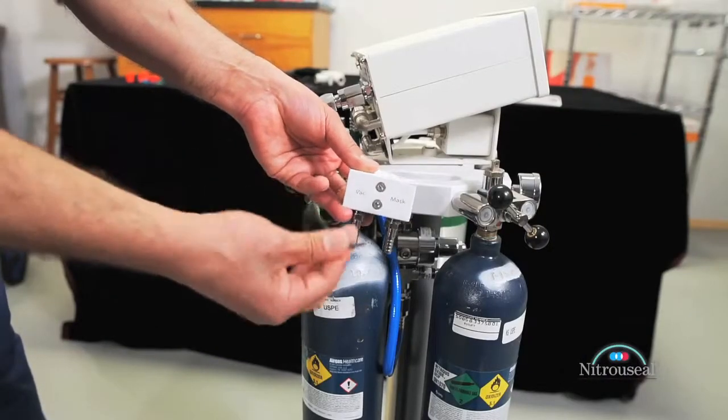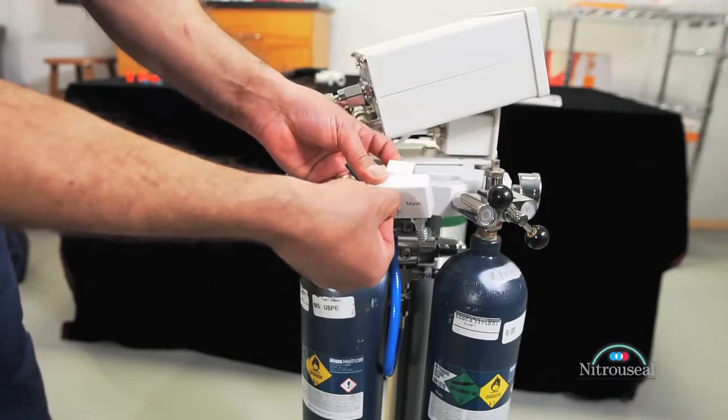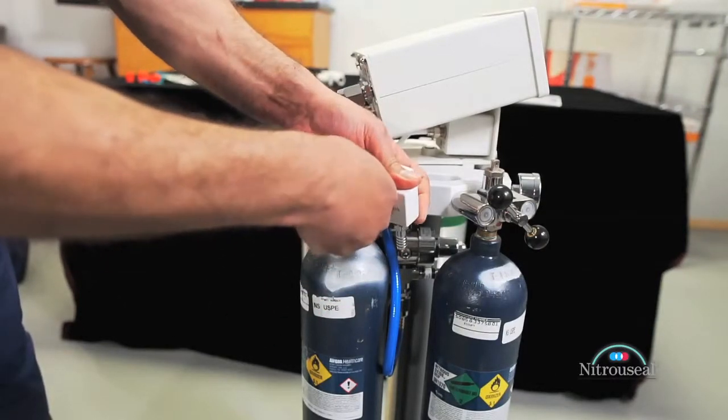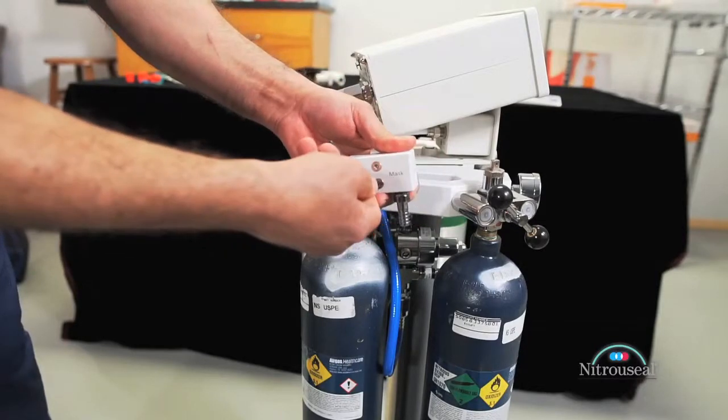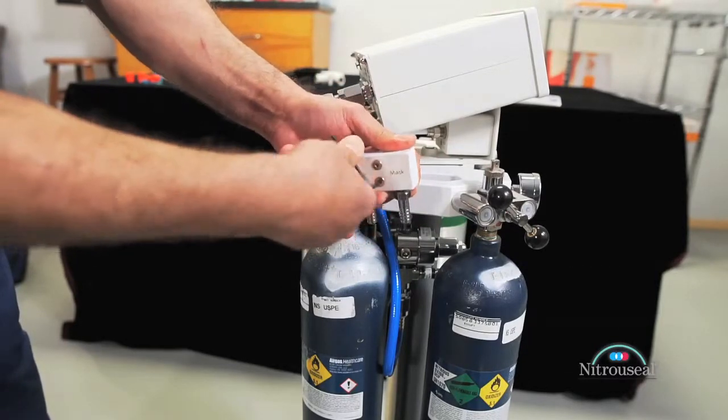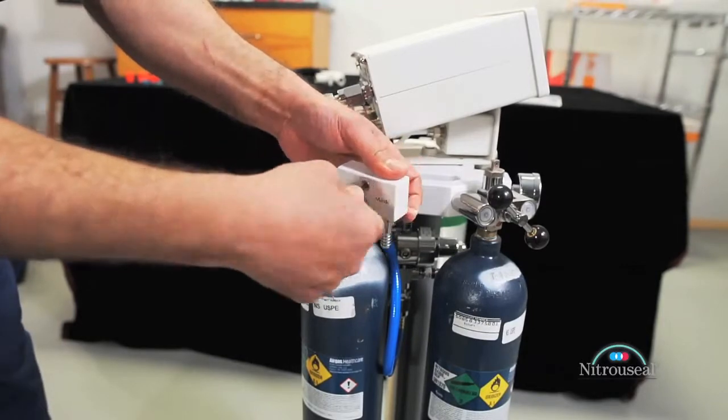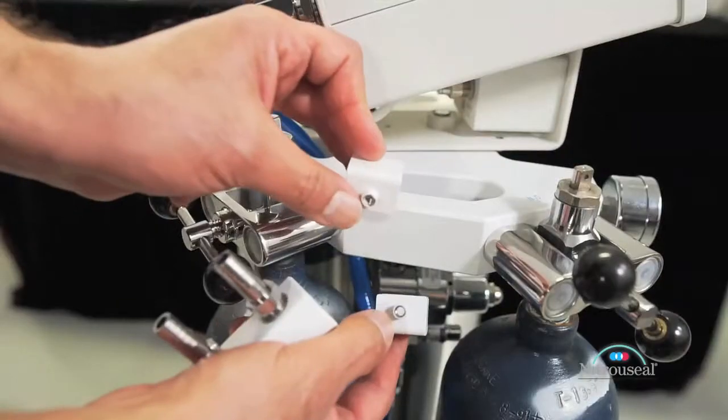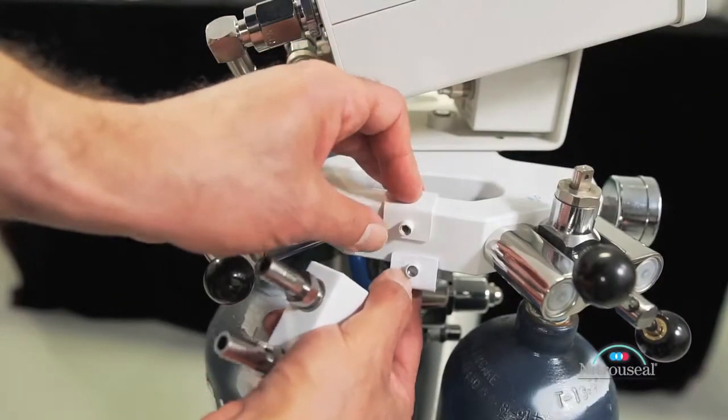Next, you will be attaching the remote vacuum block to the manifold bracket on the nitrous side. To do this, use the smallest Allen wrench to loosen the screws on the vacuum block. Once loosened, remove completely then attach the brackets to the manifold. Place the vacuum block on the brackets and tighten the screw.